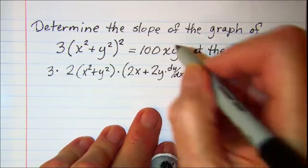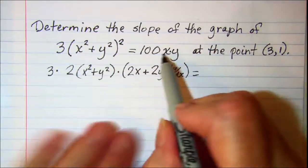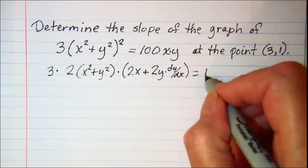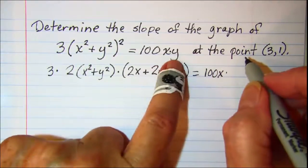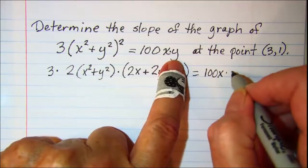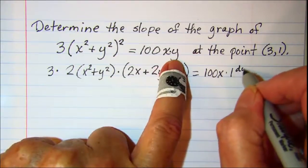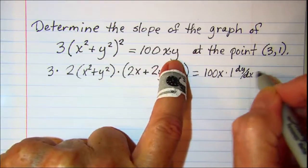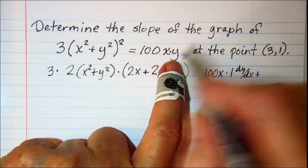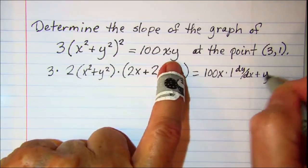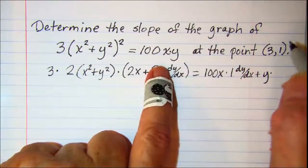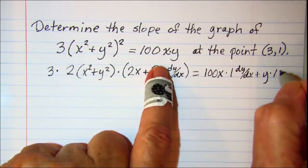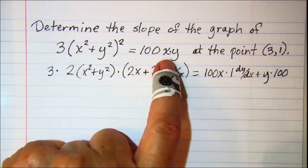On the right side I have a product so the first part is 100x times the derivative of y which is 1 times dy dx plus the second factor y times the derivative of the first one which is 100. I don't need the chain rule there.